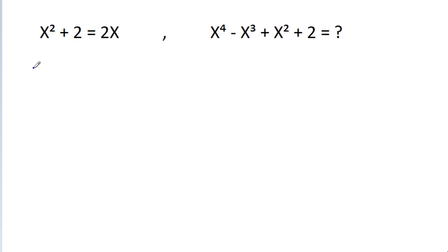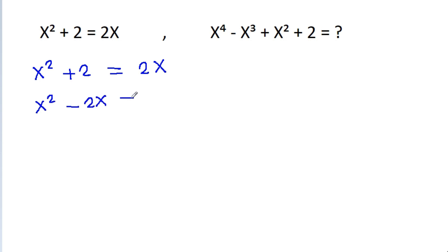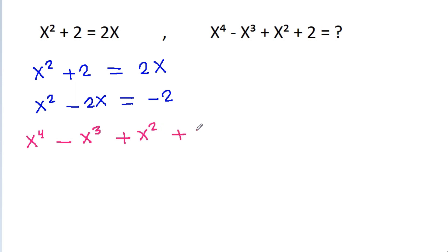So we have x squared plus 2 is equal to 2x, and x squared minus 2x will be equal to minus 2. We have to find the value of x to the power 4 minus x cubed plus x squared plus 2.